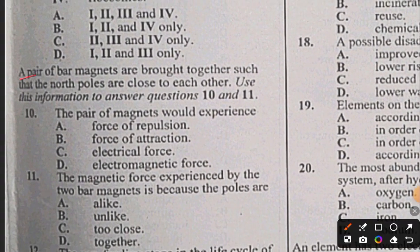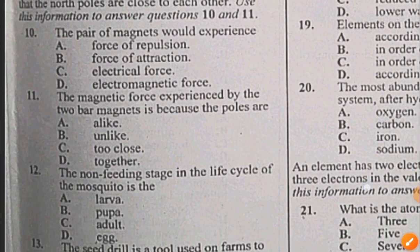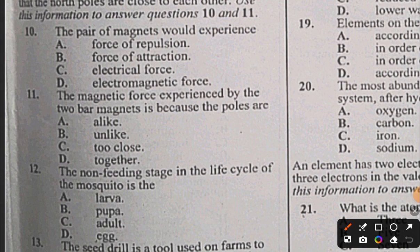Questions 10-11 preamble: A pair of bar magnets are brought together such that the north poles are close to each other. Use this information to answer questions 10 and 11. Question 10: The pair of magnets will experience - they're not false, so definitely a repulsion, so A. Question 11: The magnetic force experienced by the two bar magnets is because the poles are alike. Question 11 is also A. Question 12: The non-feeding stage in the life cycle of mosquito is the pupa.